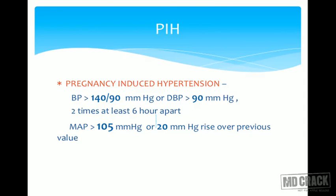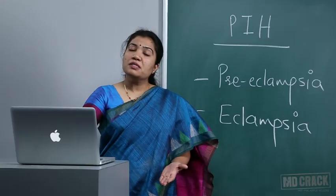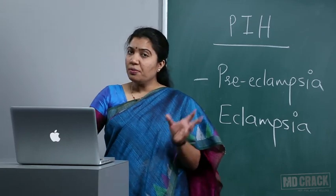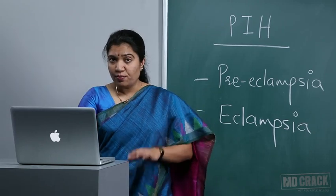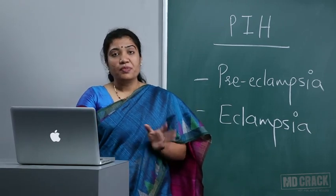If the diastolic blood pressure rises above 90 mmHg, taken twice six hours apart, it is called pregnancy induced hypertension. Or if the mean arterial pressure is above 105 mmHg, or there is a rise of 20 mmHg from the previous value in a pregnant lady after 20 weeks, it is called PIH. Key criteria: diastolic more than 90, overall BP more than 140/90, or rise in mean arterial pressure.